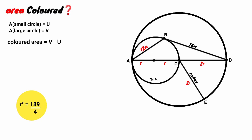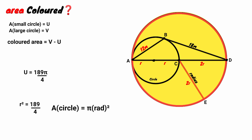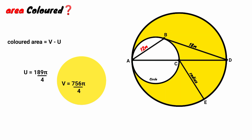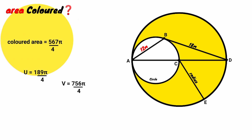The area of a circle is π times radius squared. For the small circle with radius r, its area U equals πr squared. Since r squared equals 189/4, U equals 189π/4. For the medium circle with radius 2r, its area V equals π times (2r) squared, which is 4r squared. So V equals π times 4 times 189/4, which is 756π. Substituting into V minus U: 756π minus 189π/4 equals 567π/4. Therefore, the colored area equals 567π/4 square meters.